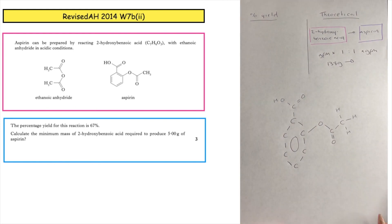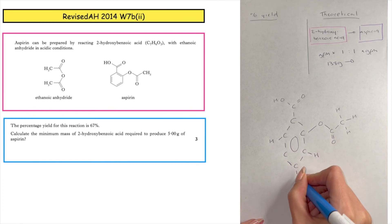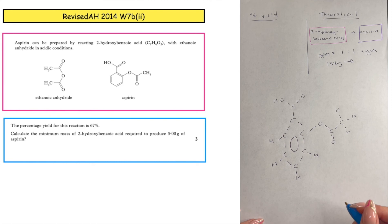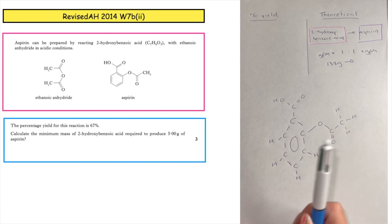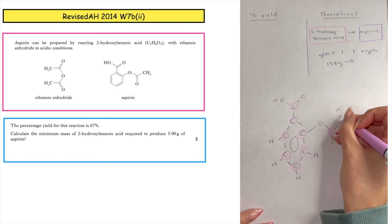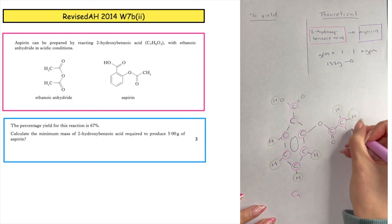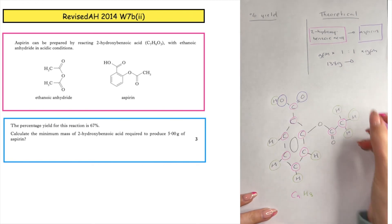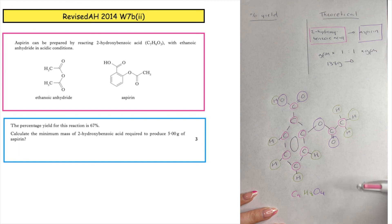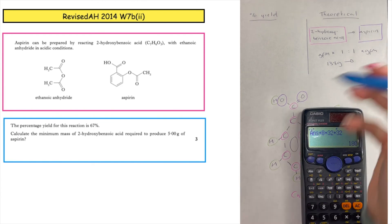That 138 grams of 2-hydroxybenzoic acid would produce aspirin. The molecular formula for aspirin isn't given directly, but the skeletal structure is, which I'm drawing out as a full structural formula. Remember, in a benzene ring, every substituted position loses a hydrogen and the remaining ring carbons each have one hydrogen. Counting atoms for aspirin: 9 carbons (C9), 8 hydrogens (H8), and 4 oxygens (O4). So the GFM is: 9 times 12 plus 8 plus 32 plus 32 equals 180 grams.